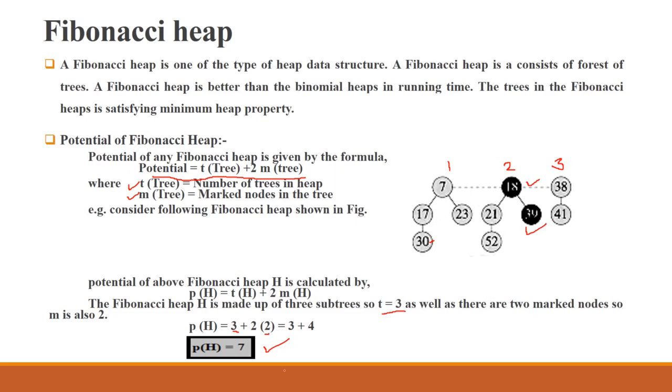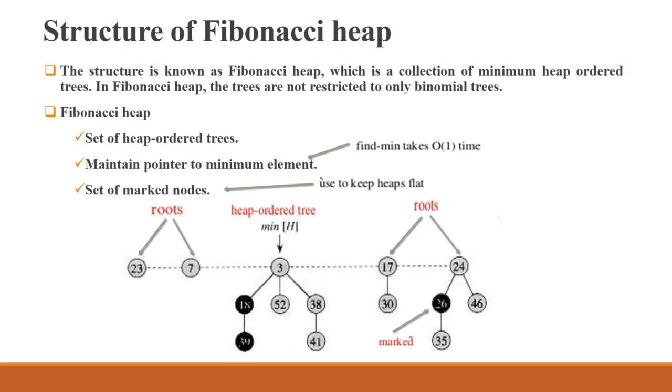Next is structure of Fibonacci heap. The structure is known as Fibonacci heap, which is collection of minimum heap ordered trees. Just as binomial heap uses minimum order, same way Fibonacci heap uses minimum heap collection.